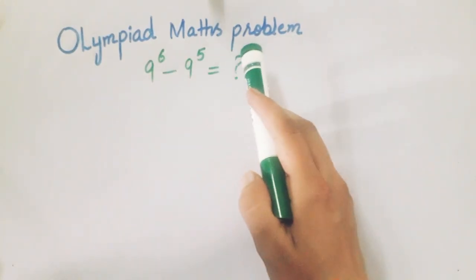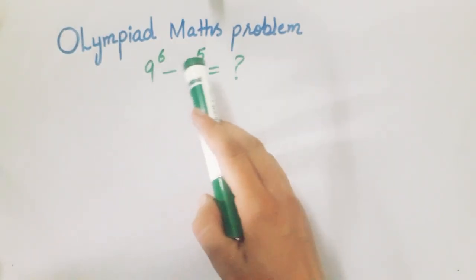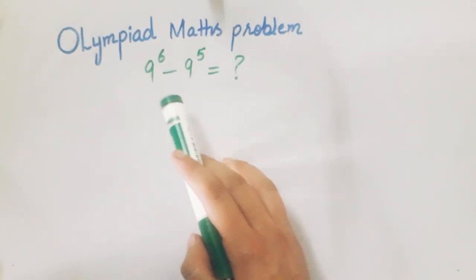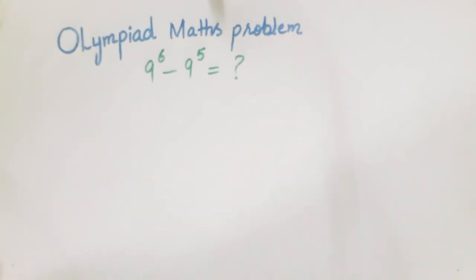Here is a power expression most students get wrong. We will solve this in seconds. At first, this looks like a huge calculation: 9^6 - 9^5. But we will solve this with a very simple pattern.